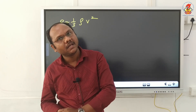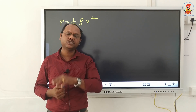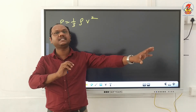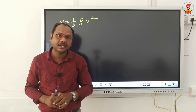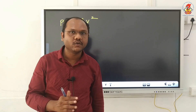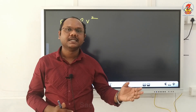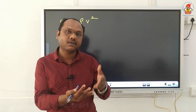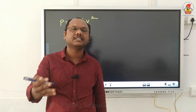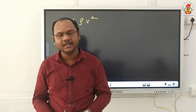Due to the change in momentum, rate of change of momentum — momentum divided by time — gives you a force. Gas molecules exert a force on the walls of the container. Force per unit area is called pressure. So because of the collision there is a change in momentum, rate of change of momentum is force, and force per area is pressure. Therefore, the gas exerts pressure on the walls of the container.